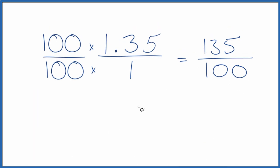So 135 divided by 5 turns out to be 27. Then 100 divided by 5, that's 20. So we end up with 27 over 20. 1.35 equals the fraction 27 over 20.